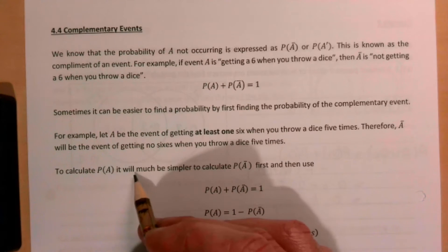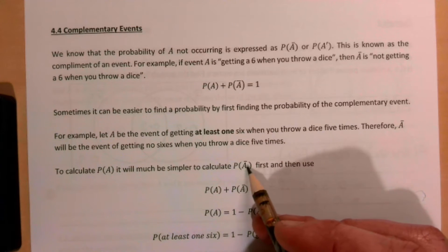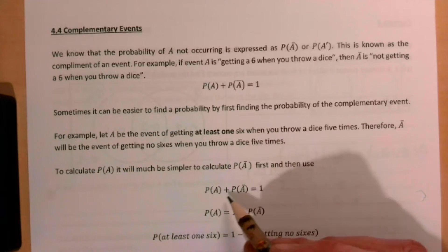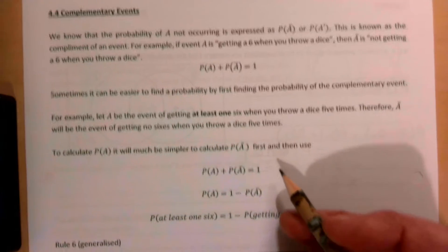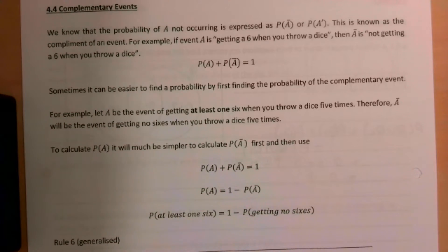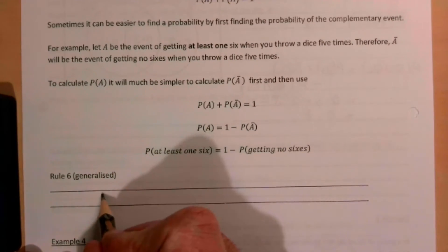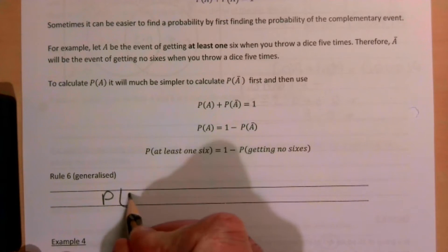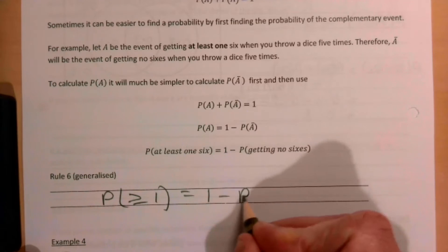To calculate the probability of A, it will be much simpler to calculate the probability of not A first and then use probability of A plus probability of not A equals 1, or probability of A equals 1 minus probability of not A. Or the probability of at least one six equals one minus the probability of getting no sixes. So generalized, this is going to be the probability of greater than or equal to one equals one minus the probability of zero.